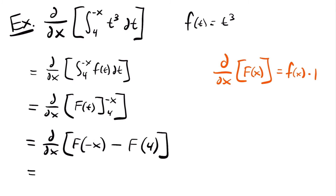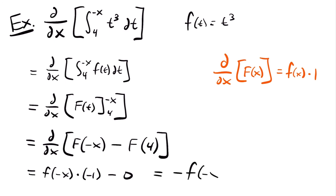Simplifying, this will be equal to negative small f of negative x. To find the answer, we plug negative x into our function f of t and negate it. So we have negative of negative x cubed. We can rewrite this as negative of negative 1 cubed times x cubed. Negative 1 cubed is negative 1, so this is negative times negative 1 times x cubed. Negative times negative 1 is positive 1, so our final answer is x cubed.